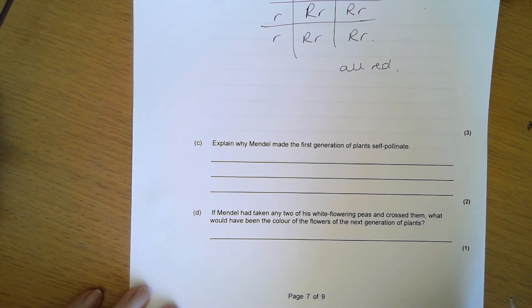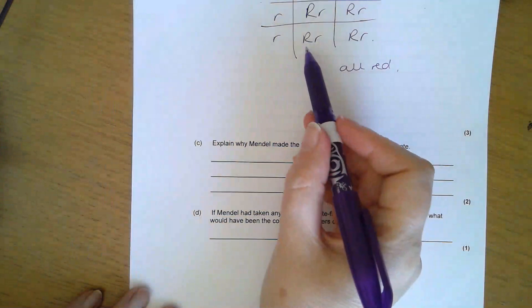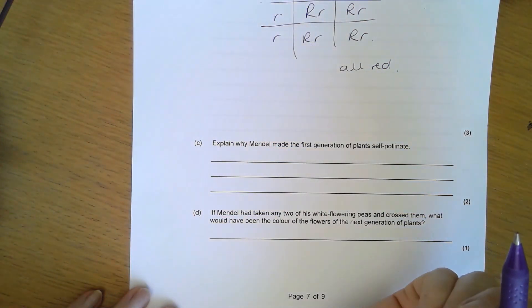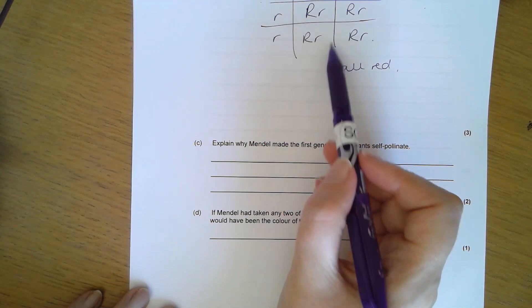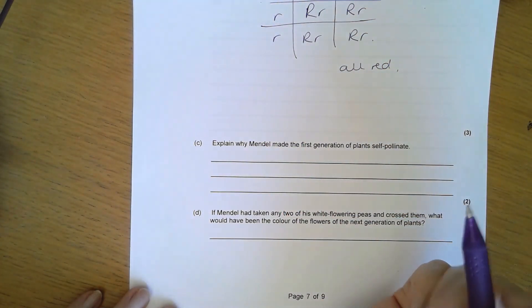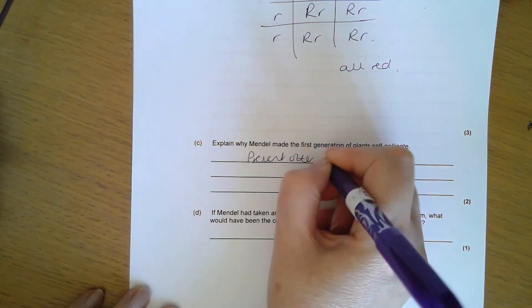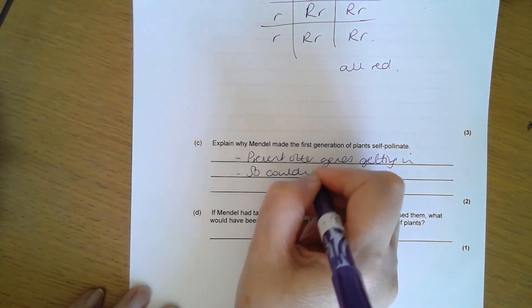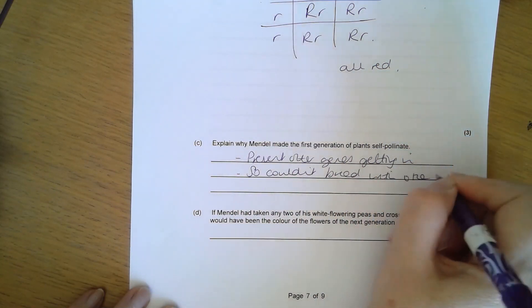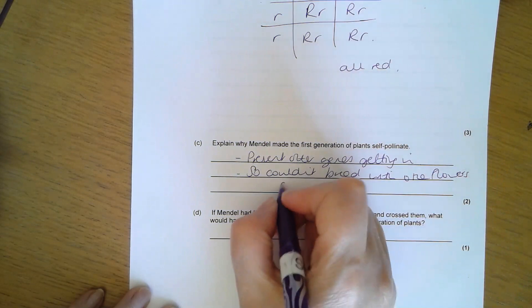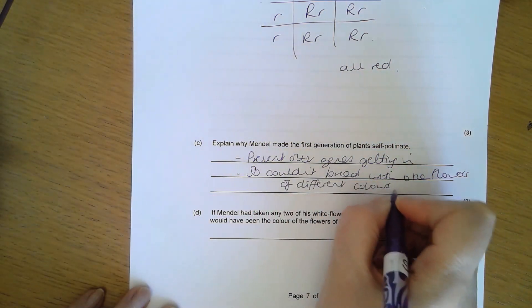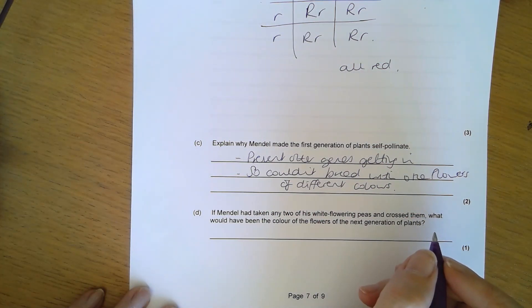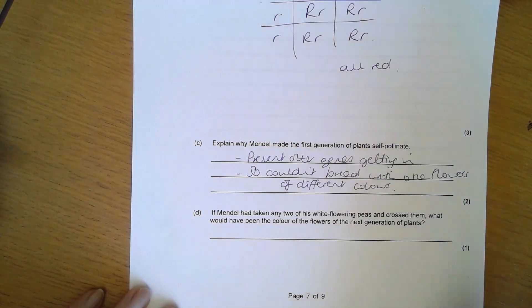For one mark I've got the correct parents, for another mark the correct children. For the third mark I need to point out they would all be red. Explain why Mendel made the first generation self-pollinate. If you didn't self-pollinate them, they could have been pollinated by any other flower. By self-pollinating he was making sure they were only pollinated by the same genes, so he could find out if they had any of the white gene in there. So it was to prevent other genes getting into the mix, or to see if they had the gene for white flowers.